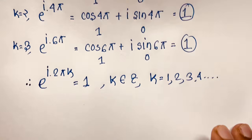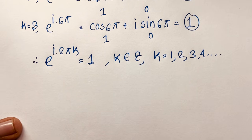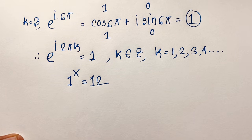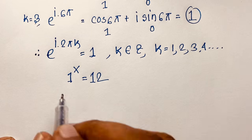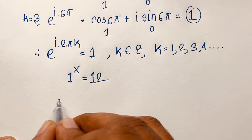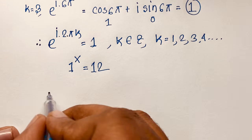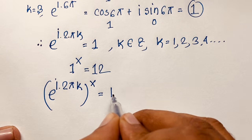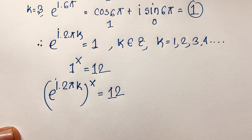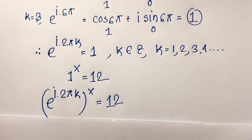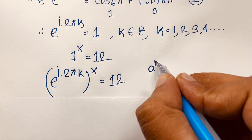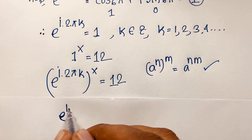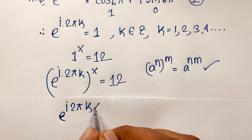Our question is 1^x = 12. Since 1 = e^(i·2πk), we substitute: (e^(i·2πk))^x = 12. Applying the exponential rule (a^n)^m = a^(nm), this becomes e^(i·2πk·x) = 12.